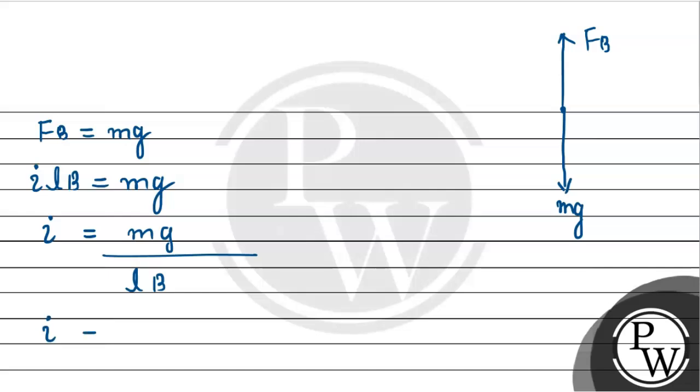So let's substitute values. i will be equal to mass, which is 250 grams. If we convert it to kg, we multiply by 10 to the power minus 3, so it becomes 0.250 kg, multiply by value of g 9.8 meter per second square, divided by length which is 2 meter, and magnetic field strength is 0.7 tesla.